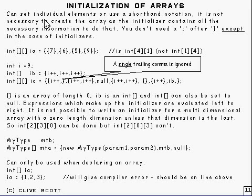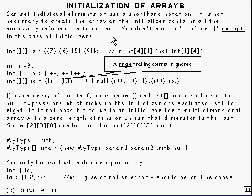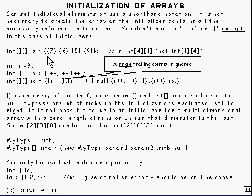Here's something called an Array Initializer, which enables you to create an array and initialize the values in it all in one go. That's often more convenient than having to set each individual element. It's quite simple — you don't need to put 'new' in front, because there's enough information to know the dimension and size of the array. One thing to note: although you don't normally need a semicolon after a right curly bracket, you do in this case — it's one of the exceptions.